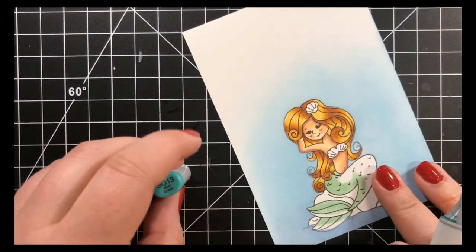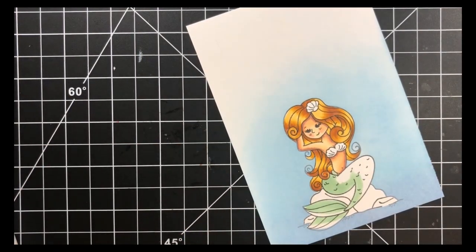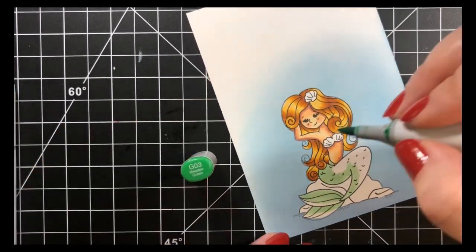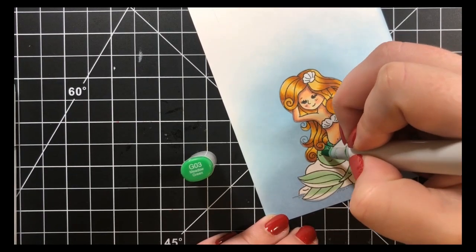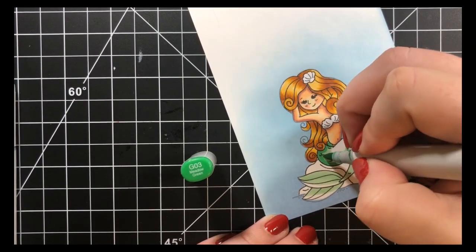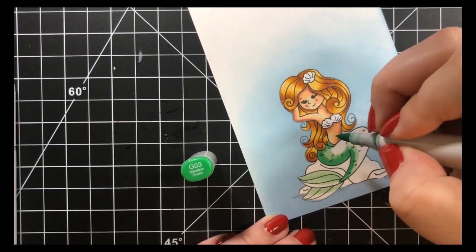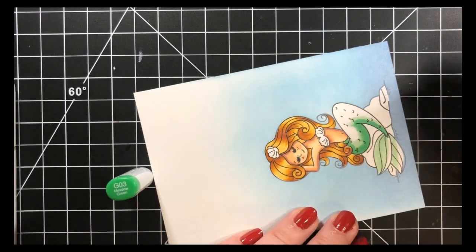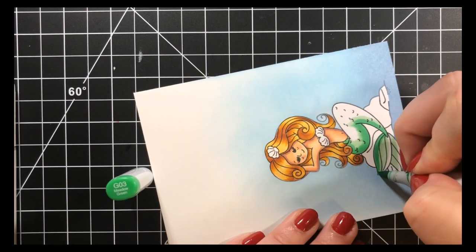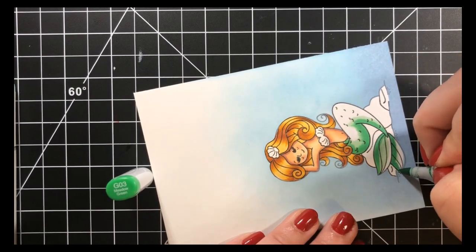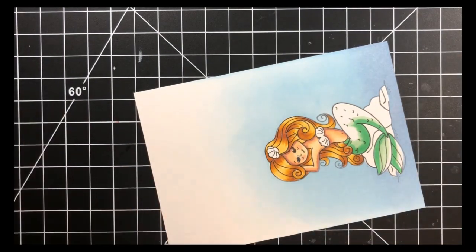Next, I'll go in with my G03 and just go on the left side of her tail and I'm not extending this very far. I'm just basically drawing some lines here in the larger areas. I will flick it out just a little bit for her fins, I guess. I'm just going on the top part.